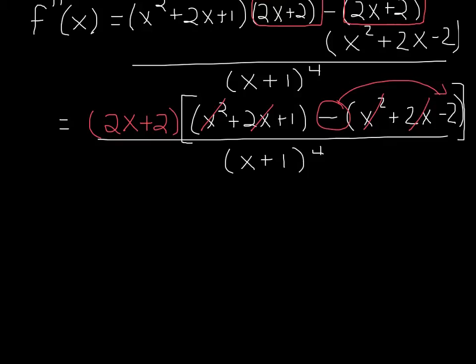And so what happens inside of this big bracket is our plus 1 minus a negative 2 turns to plus 2. So 1 plus 2 gets us a 3 out of that big mess. So that bracket just turns out to be a 3.